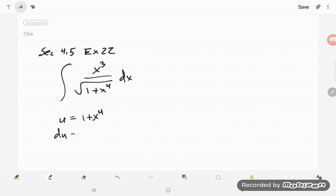in which case du would be 4x cubed dx, and so I look at this and I see x cubed dx up there, but I don't see a 4,